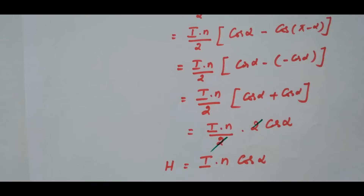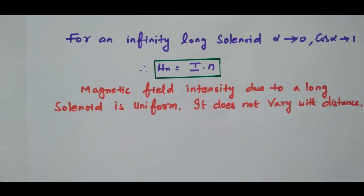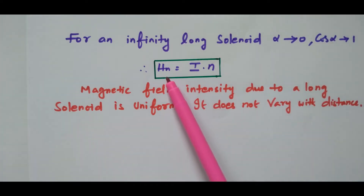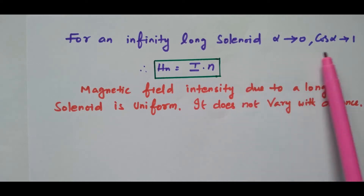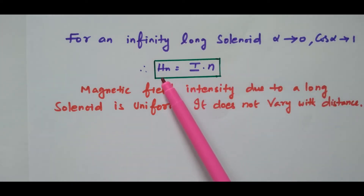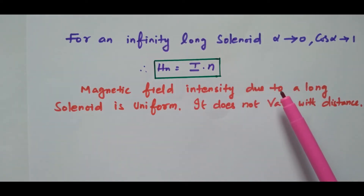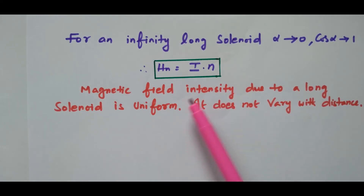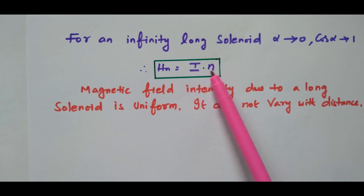So the magnetic field intensity at the centre of the solenoid is H = I·n·cos α. For the special case of an infinitely long solenoid, alpha approaches 0, so cos α = 1, giving H = I·n. This means the magnetic field intensity of a long solenoid is uniform — it does not vary with distance, depending only on current and number of turns.